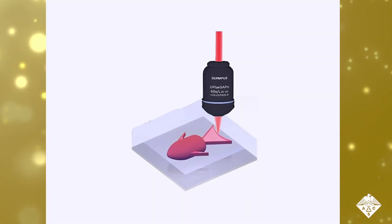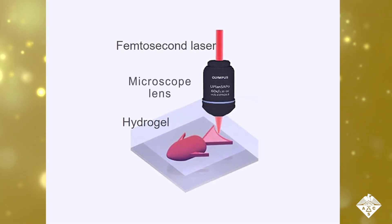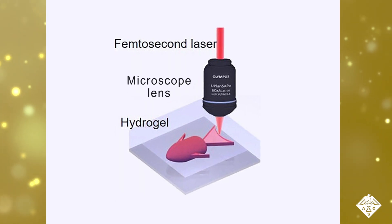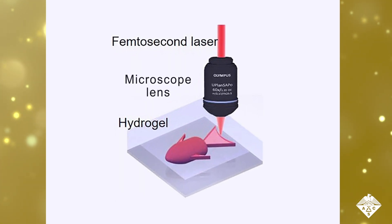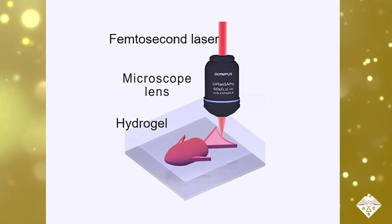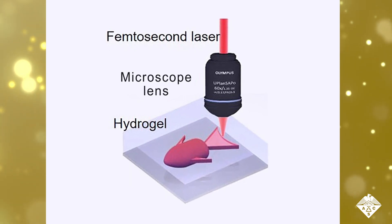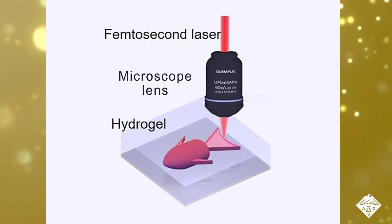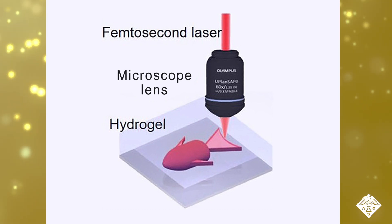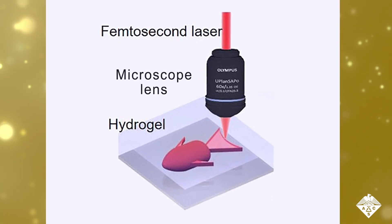To develop these devices, Jiawen Li, Li Zhang, Dong Wu, and colleagues began by 4D-printing micro-robots using a pH-responsive hydrogel. 4D-printing creates 3D-printed objects that change shape in response to certain stimuli, in this case the acidic pH of tumors.